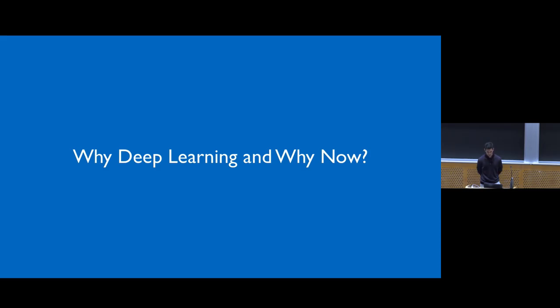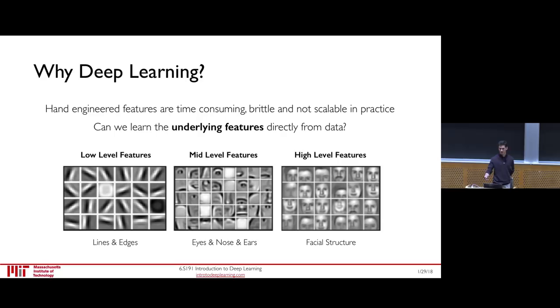Now let's start with the fun stuff and ask ourselves: why do we even care about deep learning? Why now? Traditional machine learning algorithms typically define sets of pre-programmed features in the data and work to extract those features as part of their pipeline. The key differentiating point of deep learning is that it recognizes that in many practical situations, these features can be extremely brittle.